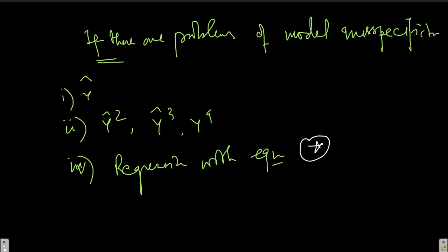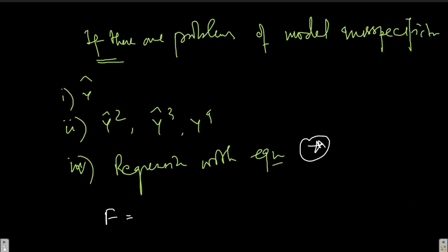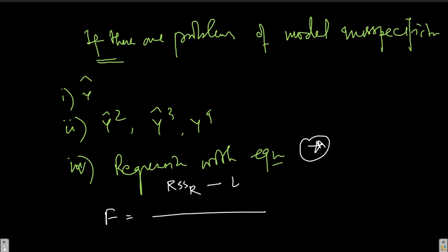In the Ramsey RESET Test, we calculate the F-statistic. The first model without any higher-order ŷ terms is the restricted model. We take the residual sum of squares for the restricted model (RSS_restricted) and for the unrestricted model (RSS_unrestricted), then divide by the appropriate degrees of freedom to form the F-statistic.